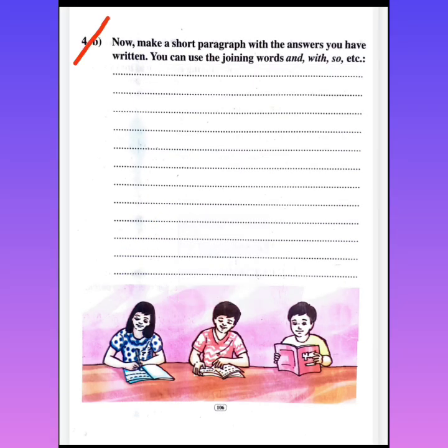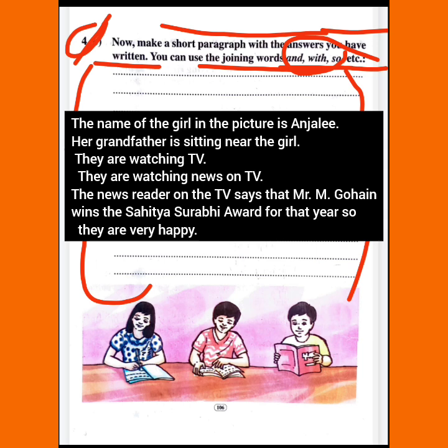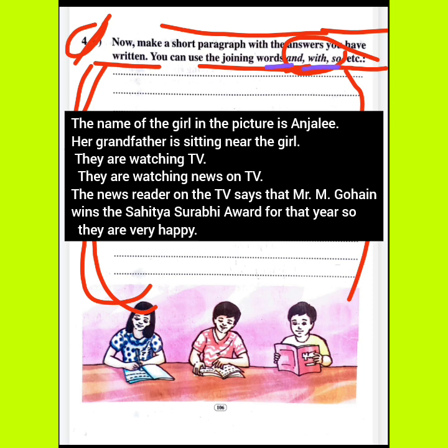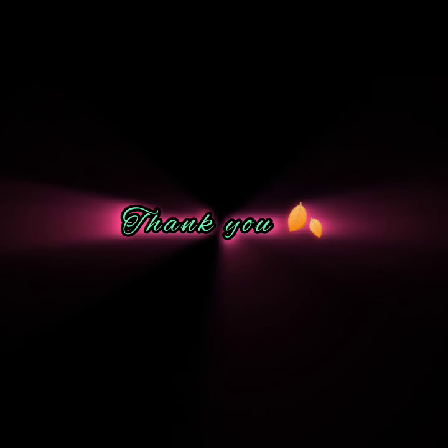Now make a short paragraph with the answers you have written. You can use the joining words: and, with, so. So this is my computer and my activities, part 1. I will upload part 2 of this episode. I will see you in the next video.